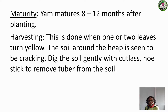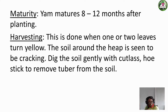Yam matures between 8 to 12 months after planting. How do you know when to harvest? Harvesting is done when one or two leaves turn yellow. You also notice that the soil where you planted the yam starts cracking and breaking open. Then you know it's ready. You harvest by digging the yam out using a cutlass, hoe, or stick to remove the tuber from the ground.